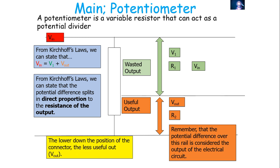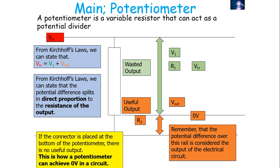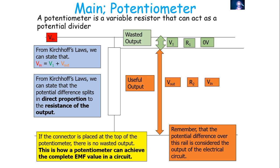The connector in a potentiometer can make it act as two output devices, and the position of the connector determines the split between useful and wasted. The lower down the connector, the less useful output there is, because less resistance is dedicated to the useful output and more to the wasted output. If you put the connector all the way to the bottom, there is no useful output — all resistance is on the wasted output, giving zero volts useful output. On the converse, if you place the connector at the top, none of the resistance is used for the wasted output, so V out equals the EMF of the source.